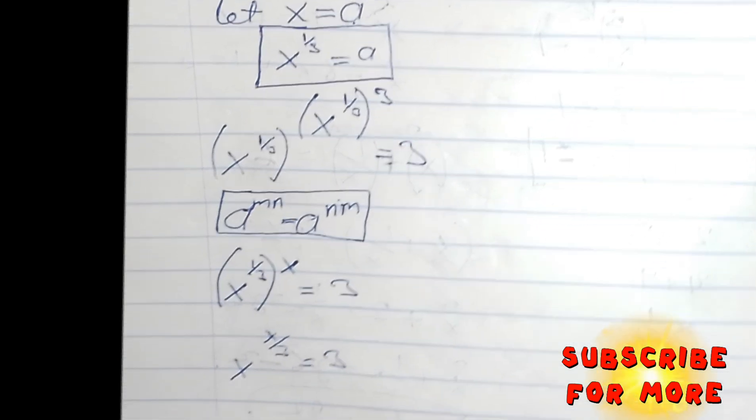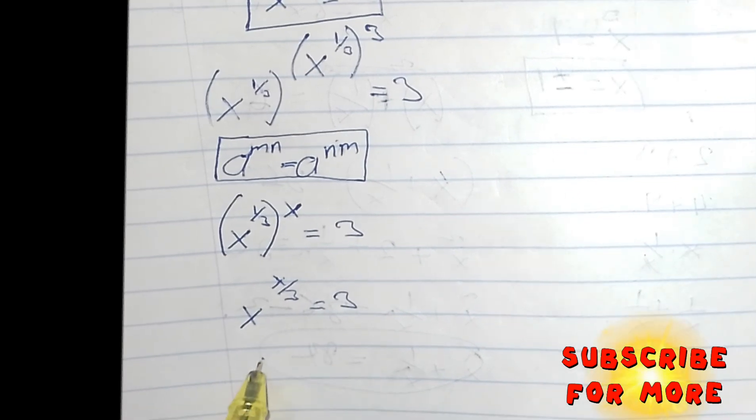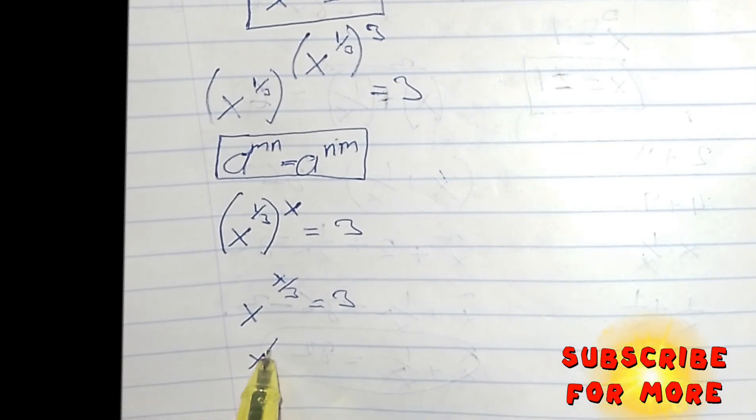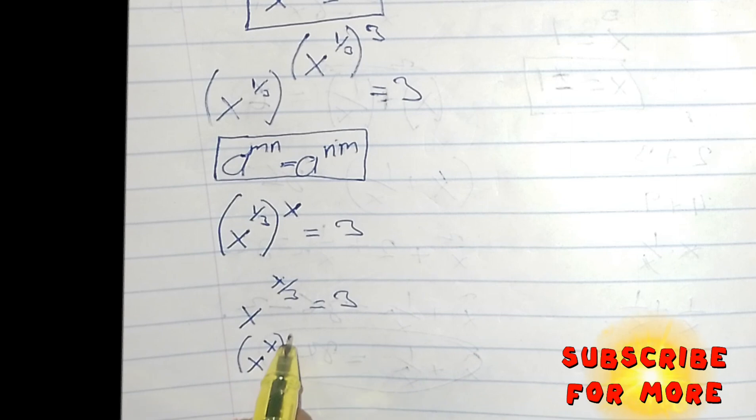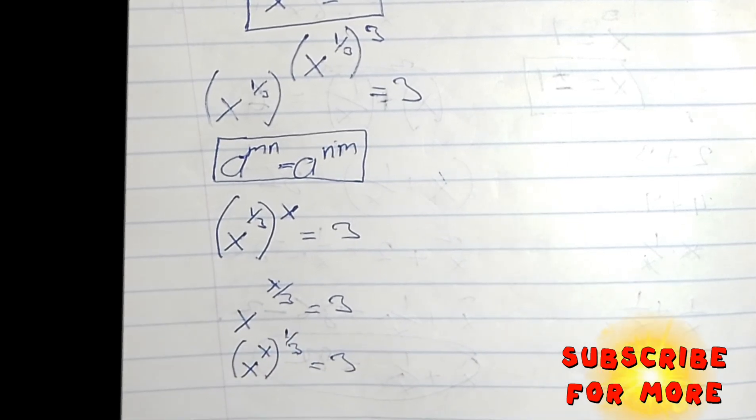This as well can be written as X raised to the power of X multiplying 1 over 3, to be equals 3.